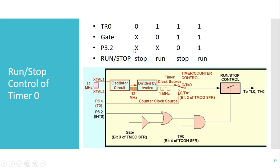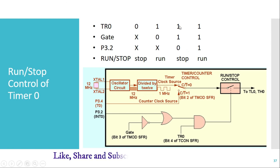If TR0 is 0, the timer is in the stop condition regardless of the Gate bit or P3.2 status. If TR0 is 1, the Gate bit is 0, and P3.2 is don't care, then the timer will be in the run state — controlled by the internal TR0 bit.